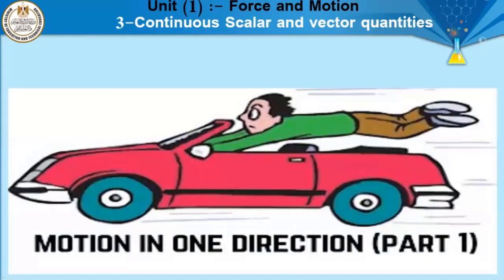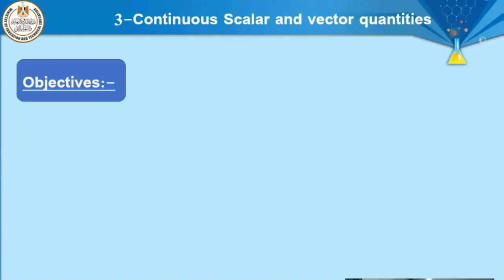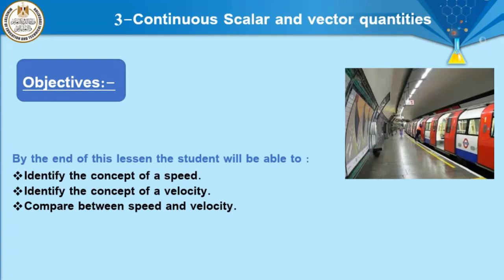We will talk about some objectives. Number one: identify the concept of speed and the concept of velocity, and to know the difference between them. We will make a comparison between speed and velocity as two examples of scalar and vector physical quantities.